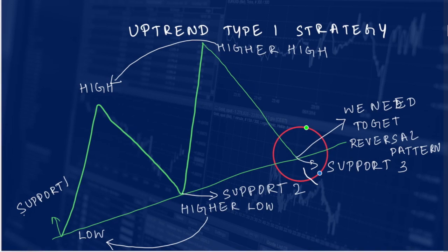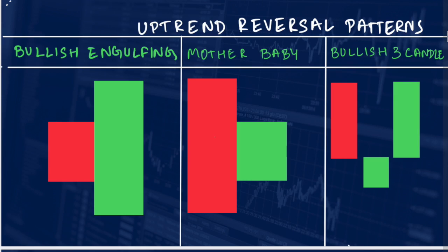So what are the reversal patterns? In the uptrend type 1 strategy there are 3 reversal patterns: the first one is bullish engulfing pattern, the second one is the mother-baby pattern, and the third one is the bullish 3-candle pattern. If you get any of these 3 patterns at the third support line, then you can enter the trade. These are very basic chart patterns that every trader has to know, and they are very important.